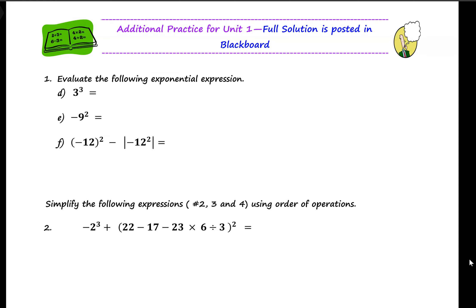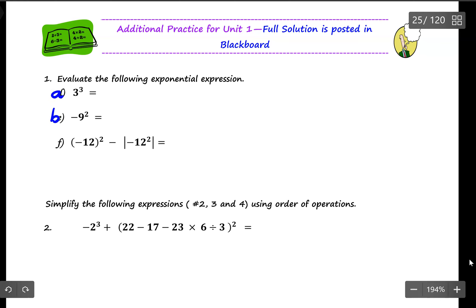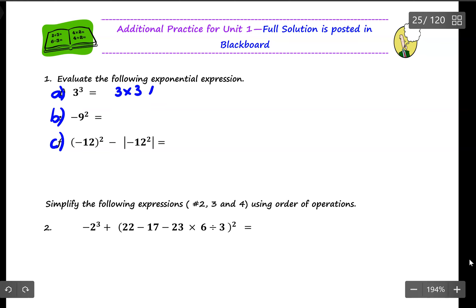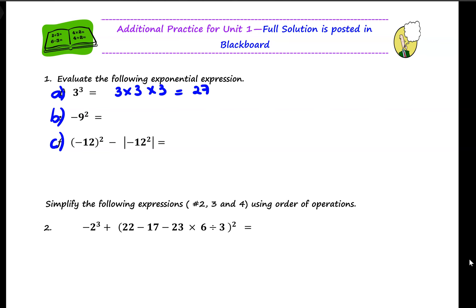Number 1 asks me to evaluate the following expression involving the exponent. So here's 1A, 1B, 1C. For question 1A, you raise 3 to the exponent 3 — it means that you multiply 3 by itself 3 times. So in this case, you should have 27. Or you can simply use the calculator to figure this out.